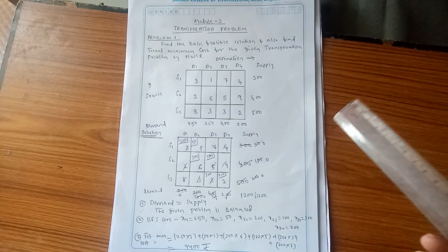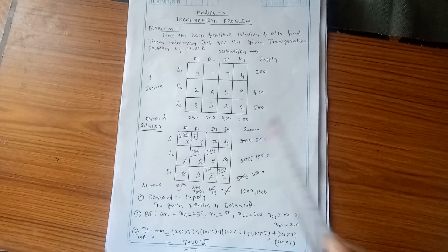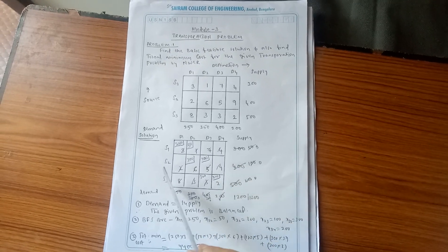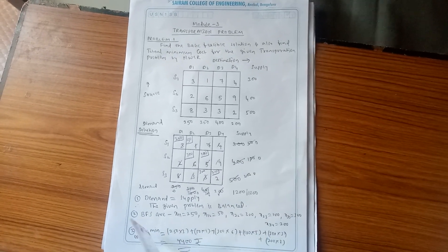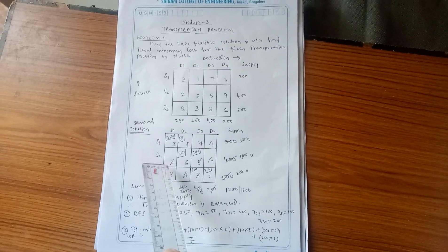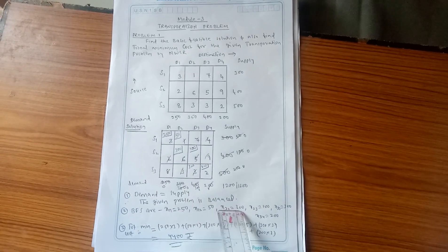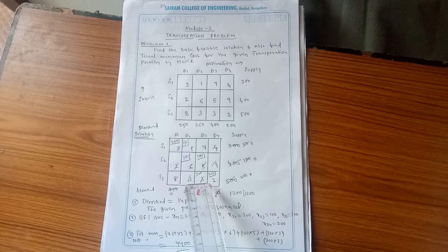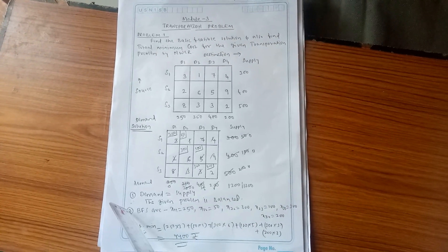Now calculate the basic feasible solution. Where allocations were made, write those values using matrix notation. X11 = 250, X12 = 50, X22 = 300, X23 = 100, X33 = 300, X34 = 200. Cells with 0 allocation (like X13, X14) are not written. This completes the basic feasible solution.